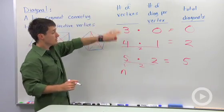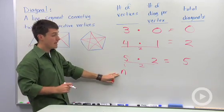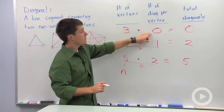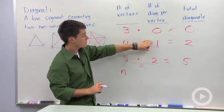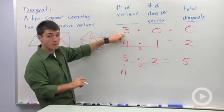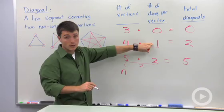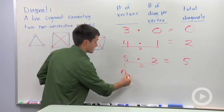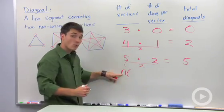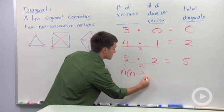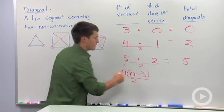So if I look at the number of vertices, we have three, so we're going to call that n. Here we have number of diagonals per vertex. Here we have zero, one, and two. And I see that to get from three to zero, I'm going to subtract three. To get from four to one, I subtract three. From five to two, I subtract three. So we have n times the quantity of n minus three, all divided by two.